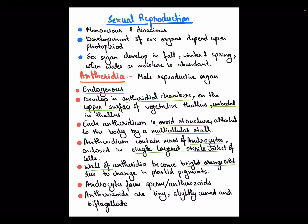Now let's talk about the structures of sex organs in Anthoceros. First, the antheridium — it is the male reproductive organ. Its development is endogenous, meaning it develops inside the thallus and is not exposed outside. It develops within antheridial chambers located on the upper surface of the vegetative thallus, embedded inside the thallus. Each antheridium is an oval structure.